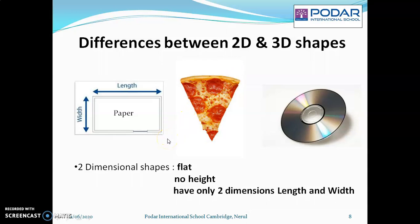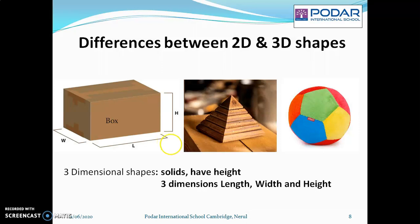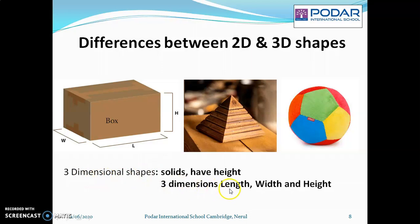Let's look at the 3D shapes then. We have the box, we have the pyramid, and we have the ball. They all are solids. That means 3D shapes are solids. They also have the length and the width including the height. That means a 3D shape will have three dimensions — the length, the width and the height.